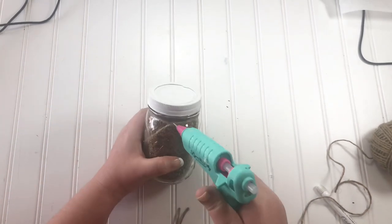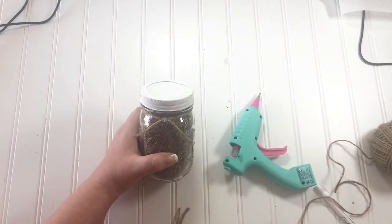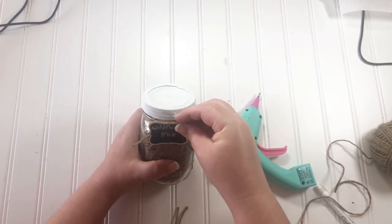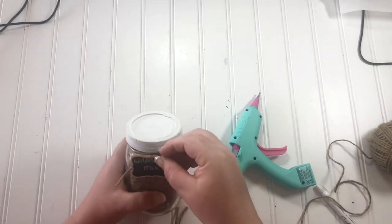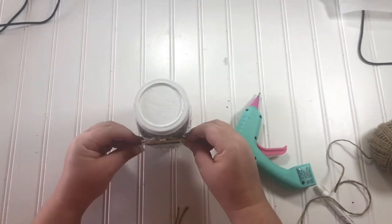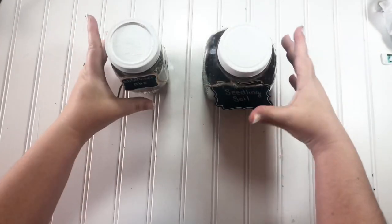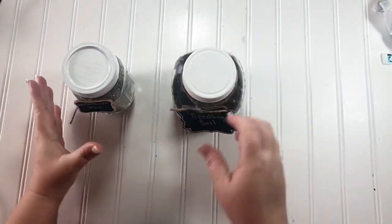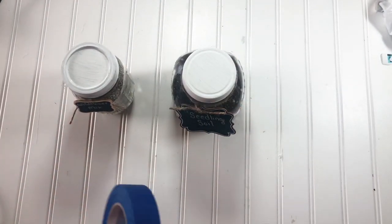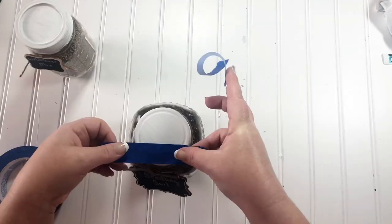Since there was no hole in this tag to tie it on with the jute string, I just used hot glue to hot glue it right to the jute string, not to the jar but to the jute string. And I just kept going and going with these jars.